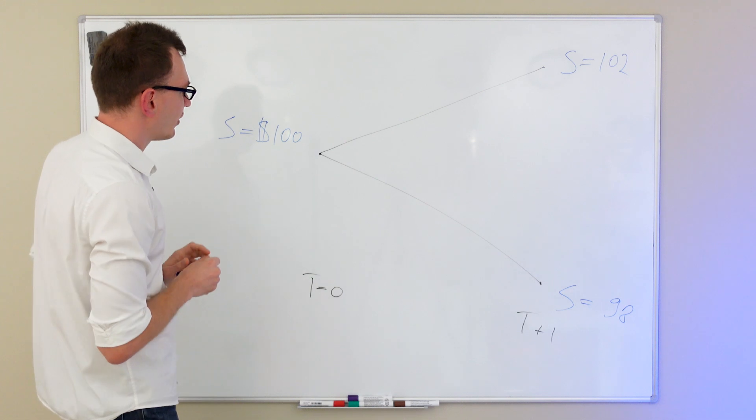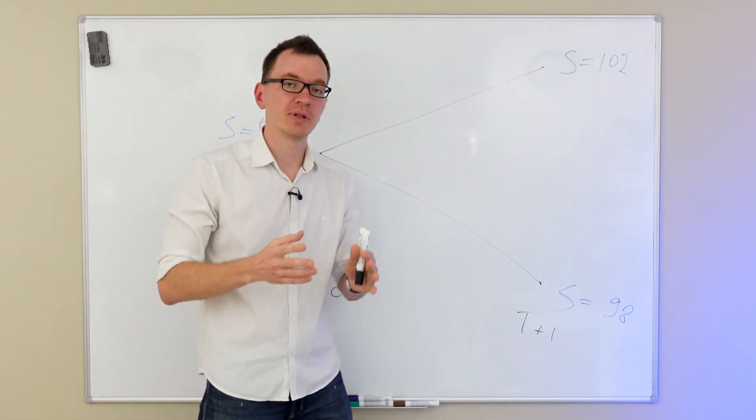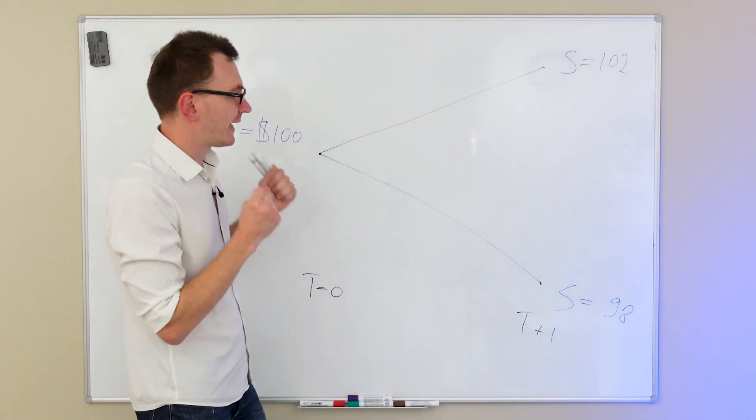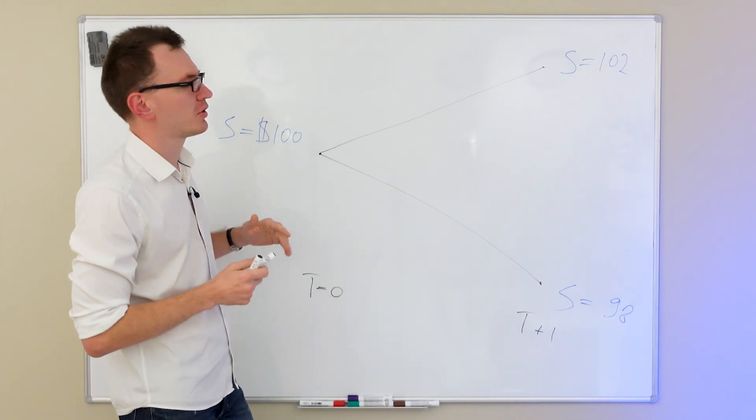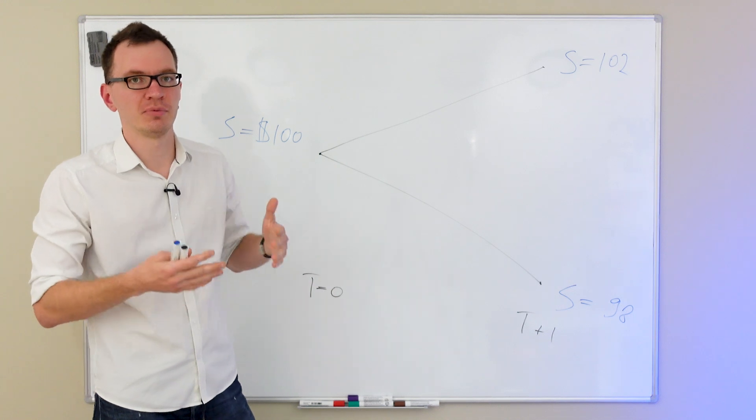It doesn't really matter if this one step is tomorrow or next week or one month, as long as we know that it's a discrete jump. We're either here or we're here. There are no intermediary states that are possible. Now, what we want to do right now is, within this framework, we want to price options. So, let's assume that we are market makers and we trade options, and our task right now is to figure out how much to charge clients for our options, or in other words, how much should an option be worth.